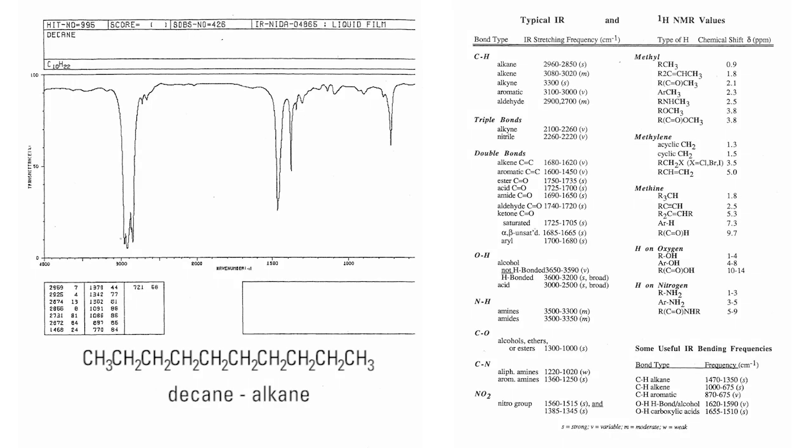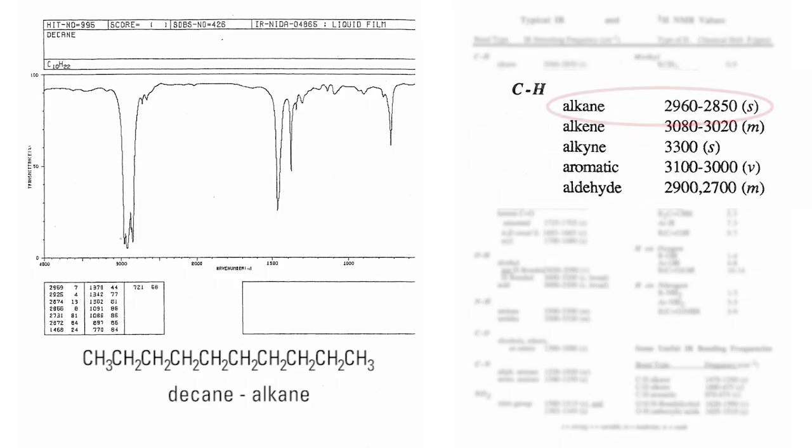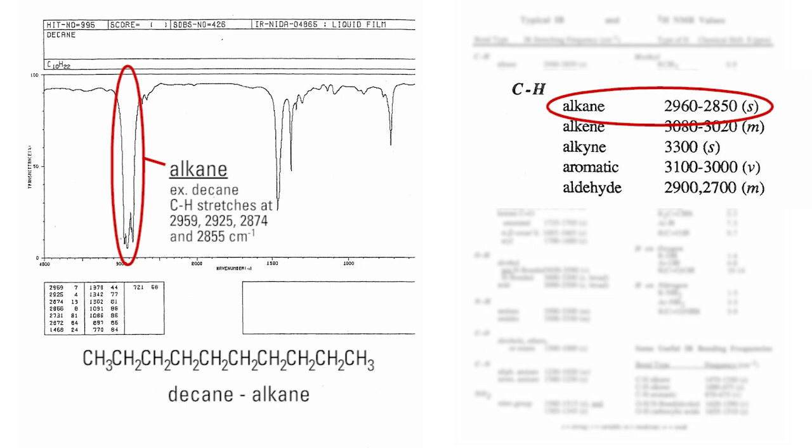On the other hand, alkanes can be identified by their SP3 hybridized CH stretching, which appears between 2960 and 2850 centimeters to the negative 1. This can be seen in the IR spectrum of decane, with CH stretches at 2959, 2925, 2874, and 2855 centimeters to the negative 1.